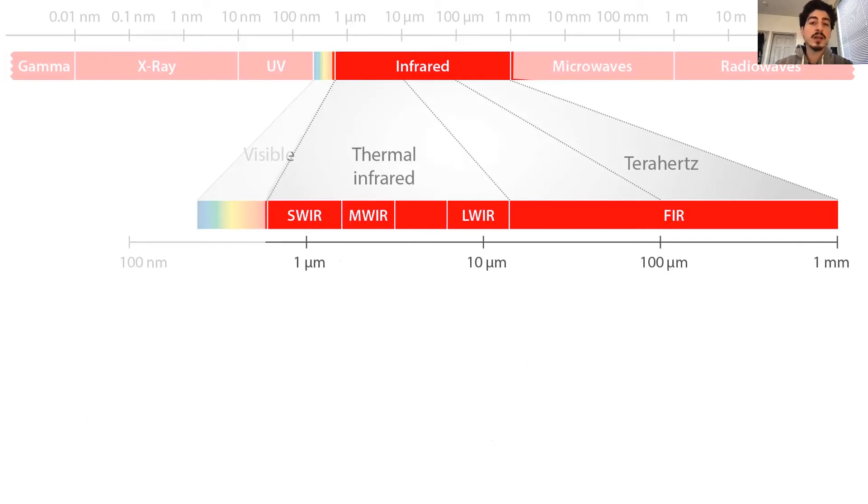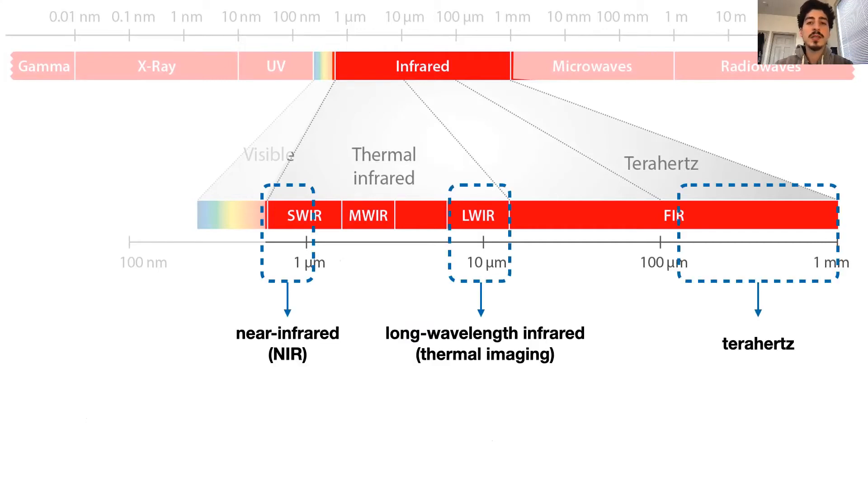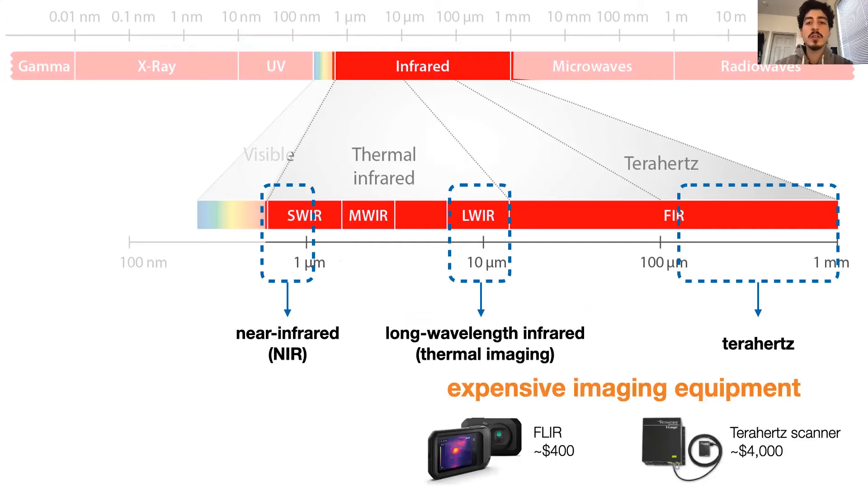Because infrared cannot be directly seen by humans, we can use these regions to encode and decode invisible information. Here you see some of the regions within infrared, from near-infrared to terahertz. If you want to image objects in long wavelength infrared or terahertz, that is going to be pricey. As you see in these examples, the longer the wavelength, the more expensive is the imaging equipment.